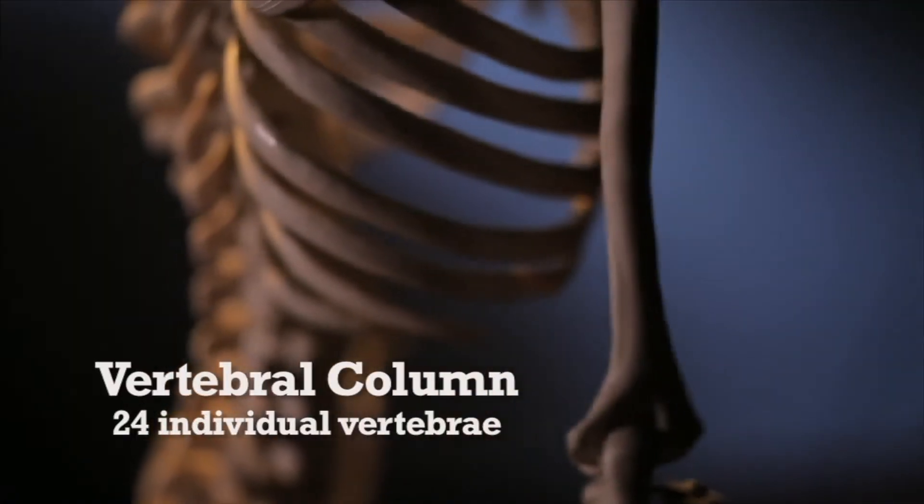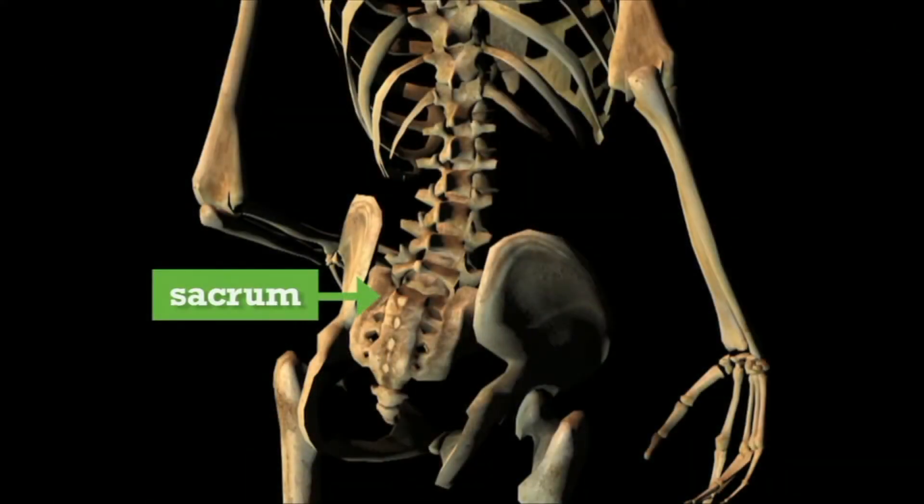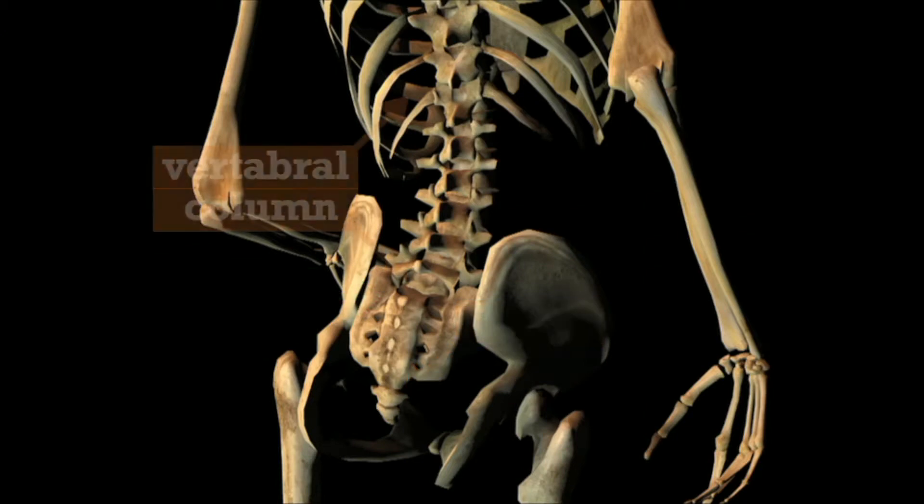The vertebral column is composed of 24 individual vertebrae and two sets of fused bones called the sacrum and coccyx. The vertebral column supports the trunk of the body and surrounds and protects the spinal cord.